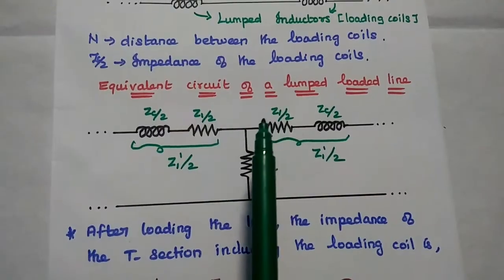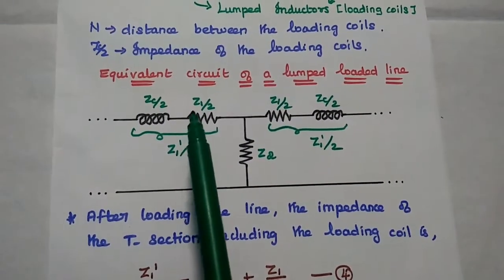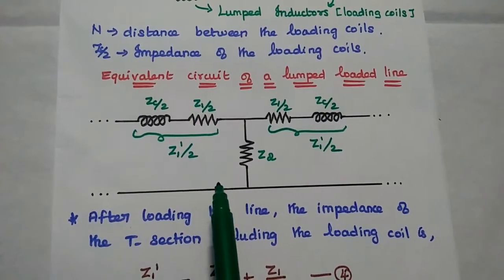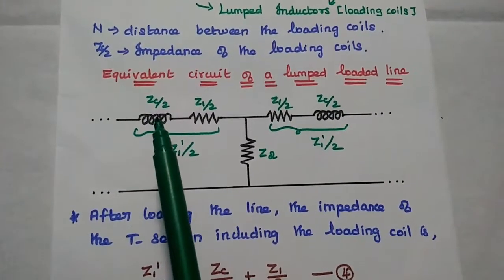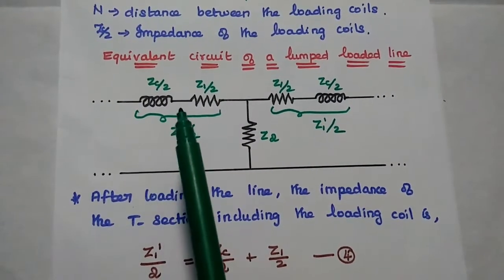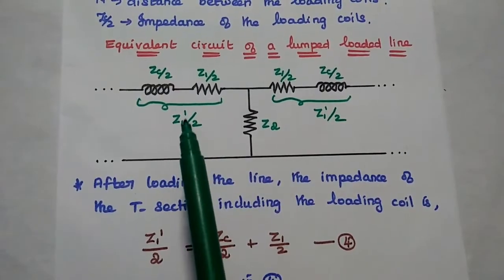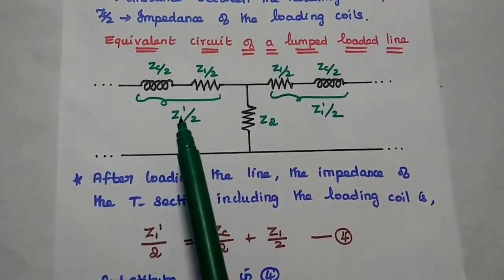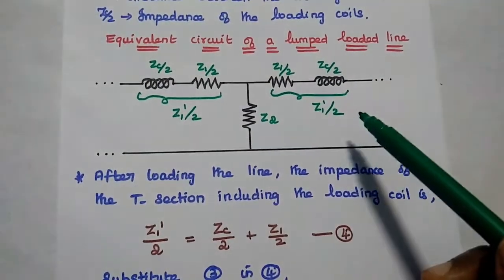After loading, the equivalent circuit of the lumped loaded line is given as follows. Z1 by 2, Z1 by 2, and Z2 represent the basic transmission line. After loading, we connect ZC by 2 in series with Z1 by 2. The combination of ZC by 2 and Z1 by 2 is represented as Z1 dash by 2 — that is the series impedance after loading.